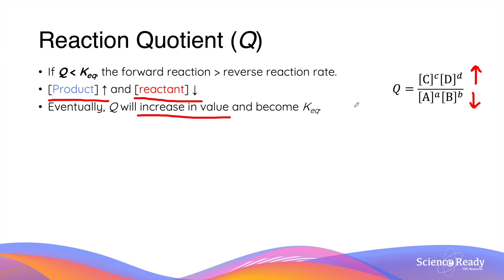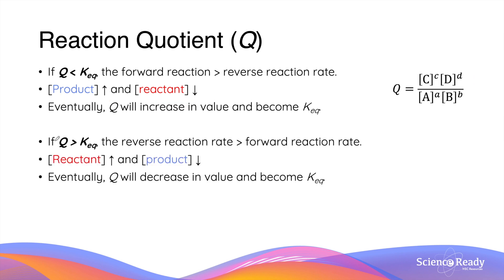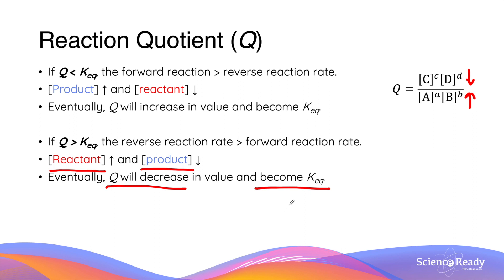This change will continue until the reaction quotient becomes the same value as the equilibrium constant Keq. If the reaction quotient is larger than the equilibrium constant, then the opposite is true. The reverse reaction rate now becomes faster than the forward reaction rate, so over time the concentration of reactants will increase and the concentration of products will decrease. As the reactants increase and the products decrease, the numerator becomes smaller and the denominator becomes larger, so the value of the quotient will decrease over time until it becomes equal to the equilibrium constant Keq.